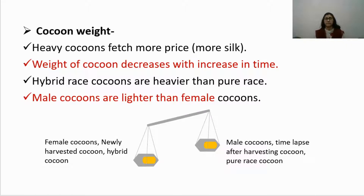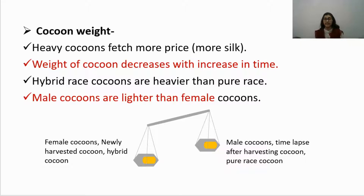Heavy cocoons fetch more price because more weight means more silk. Weight of a cocoon decreases with increase in time, so it is advised to sell the cocoon as soon as it is harvested. Hybrid race cocoons are heavier than pure race varieties, and female cocoons are heavier than male cocoons. As shown in the diagrammatic representation, female and newly harvested hybrid cocoons have more weight, while male cocoons and those from pure races harvested later have less weight.